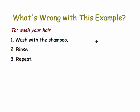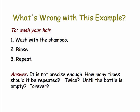But here's an algorithm that isn't precise enough. Let's see what's wrong. To wash your hair, wash with shampoo. Then rinse, then repeat. If you follow this algorithm, you don't know when to stop. How many times should you repeat? Should you do it twice? Should you keep going until the bottle is finished? Should you go on forever? This algorithm is not precise enough.